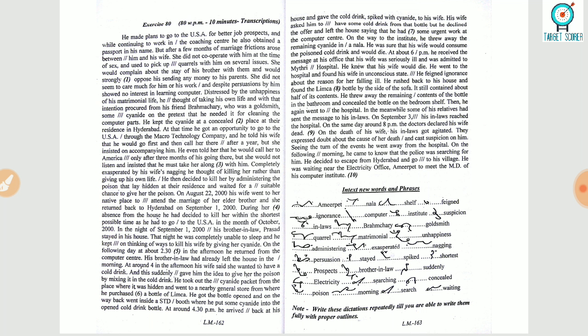he had decided to kill her within the shortest possible time as he had to go to the USA in the month of October 2000. In the night of September 1, 2000, his brother-in-law Prashad stayed in his house. That night, he was completely unable to sleep and he kept on thinking of ways to kill his wife by giving her cyanide.